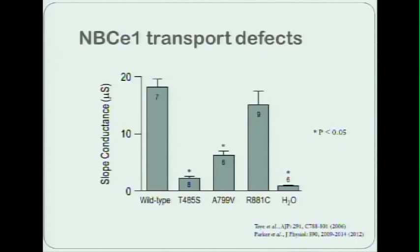Thankfully, oocytes injected with water don't have any NBC activity, but oocytes injected with NBC do. And then when we look at the mutants, we find that two of the mutants have quite severe intrinsic transport defects, whereas the R881C, which didn't actually make it out to the plasma membrane in renal cells, appears to have fairly normal transport activity.